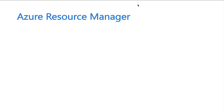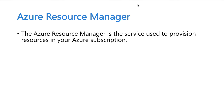Azure Resource Manager was introduced after the original classic deployment model, which Azure launched around 2009. Classic deployment lacked granularity in role-based access control and had other drawbacks. Resource Manager took care of those shortcomings. It's basically a service used to provision resources in your Azure subscription — when you create an Azure account, you first select a subscription type, and Resource Manager deploys or provisions resources within that subscription.